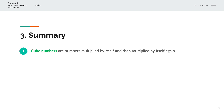To summarize, cube numbers are numbers multiplied by itself and then multiplied by itself again. So we have the number 1, multiplied by 1, multiplied by 1. The notation for that is 1 cubed, and that is equal to 1.